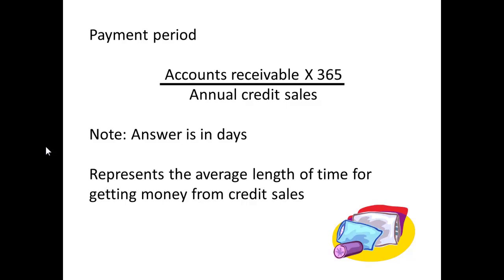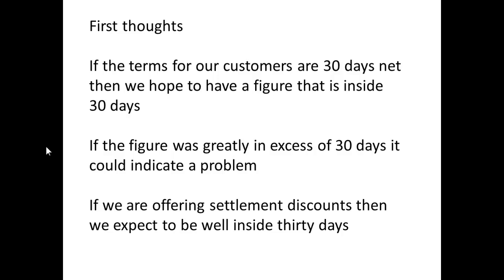So let's look at the payment period. We take the accounts receivable and divide by the annual credit sales and multiply by 365. The answer will be in days and it will represent the average length of time for getting money from credit sales. In our examples that follow, we are going to assume that all sales are in fact credit sales, for ease of demonstrating the calculations.